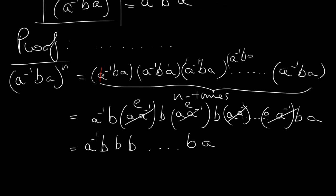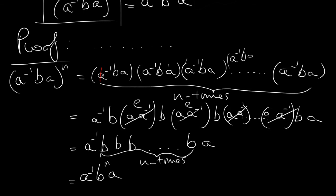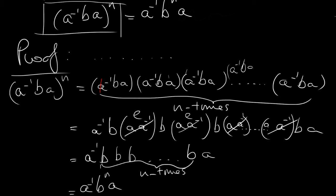There is a b in each of these terms, so we have n b's — b operated with itself n times, which is bⁿ. So we have a⁻¹bⁿa, and this proves our statement. We are done. Thank you for watching — I'll see you in the next video where I'll do another problem.